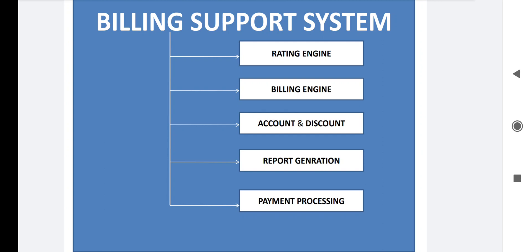The next module is report generation. Once your bill and invoice are generated, reports related to a particular customer are created — such as the billing cycle, different details, or history of bill payments — and stored in BSS for further processing. For example, if a particular customer is deactivated from your services and you want that customer's data in the future, you can easily check it from the report. There are different types of reports, like a core report, which may include customer information, billing code functionality, or what bill they have paid.